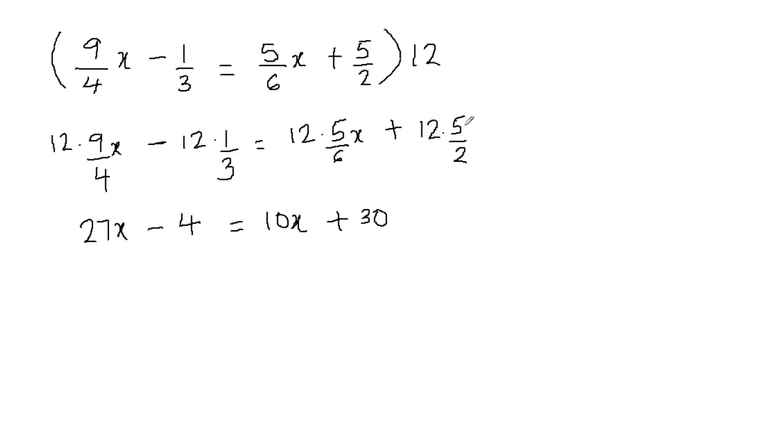And you can do it this way. 12 times 5 is going to give you 60 and 60 divided by 2 will still give you 30. So both ways are okay.